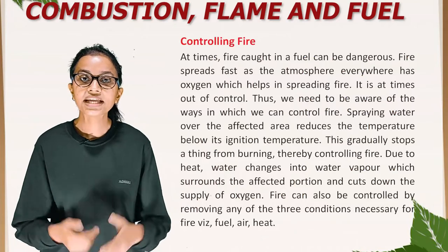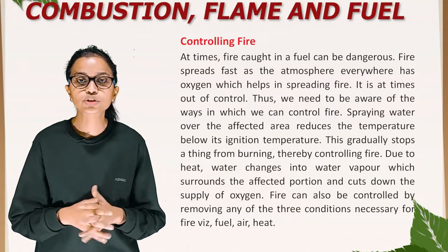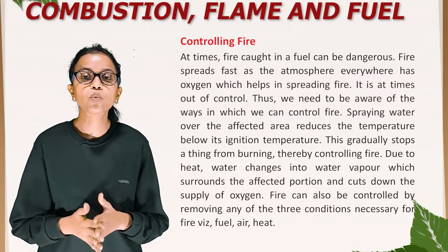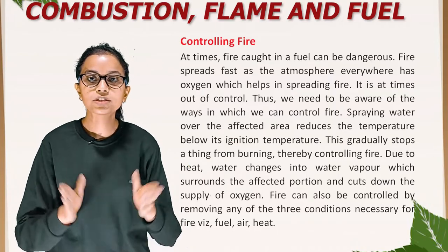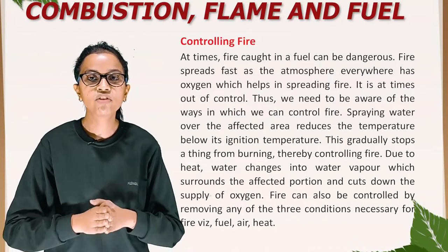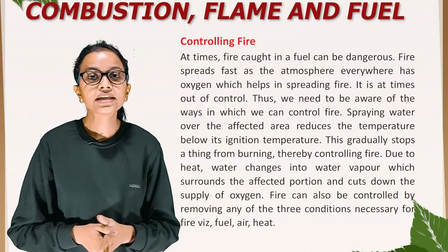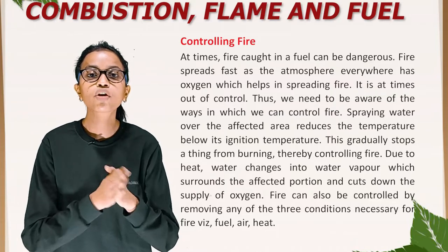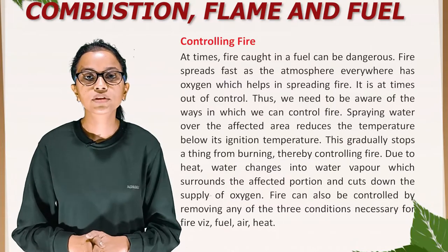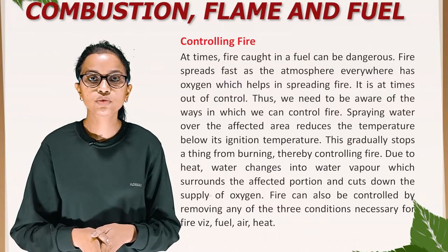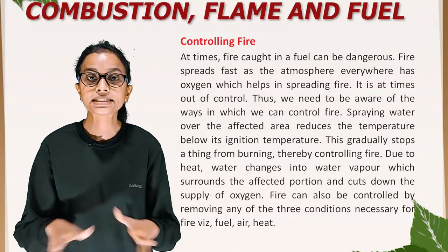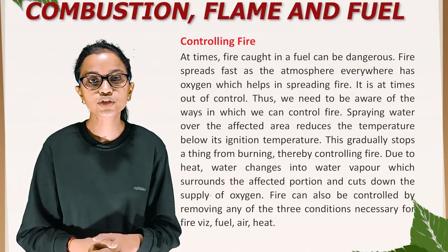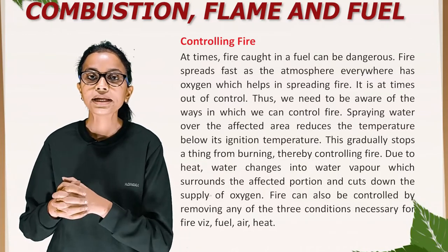Controlling fire. At times fire caught in a fuel can be dangerous. Fire spreads fast as the atmosphere everywhere has oxygen, which helps in spreading fire and it is at times out of control. Thus we need to be aware of the ways in which we can control fire. Spraying water over the affected area reduces the temperature below its ignition temperature, which gradually stops a thing from burning, thereby controlling fire. Due to heat, water changes into water vapor which surrounds the affected portion and cuts down the supply of oxygen. Fire can also be controlled by removing any of the three conditions necessary for fire: fuel, air, or heat.